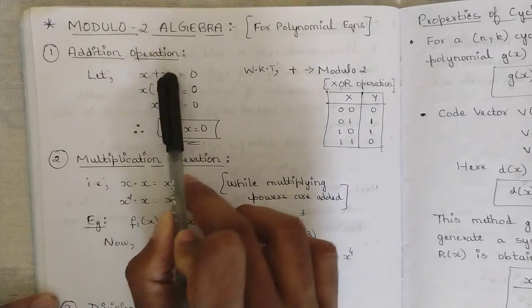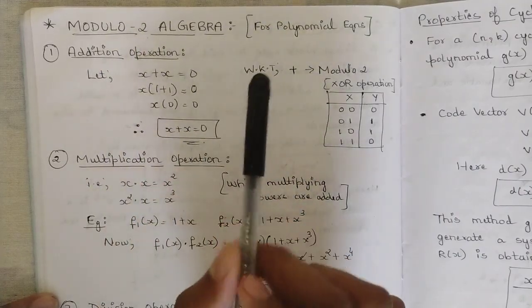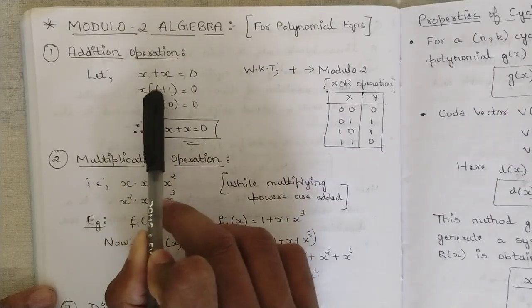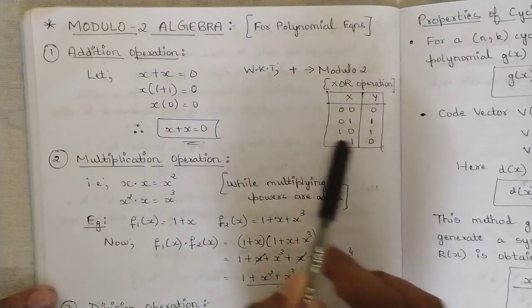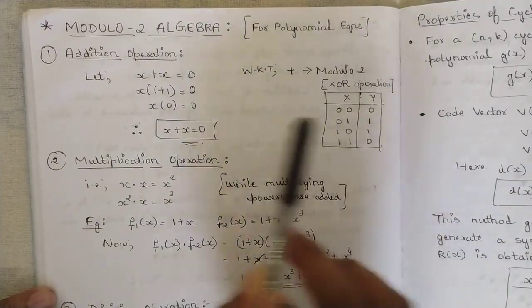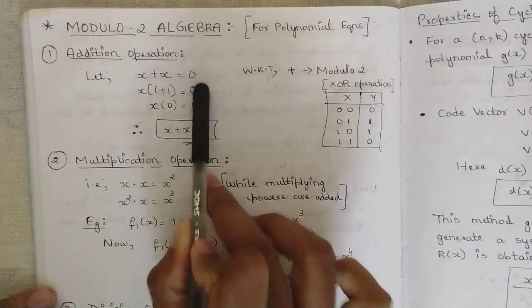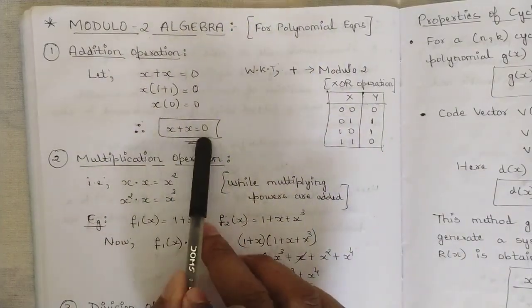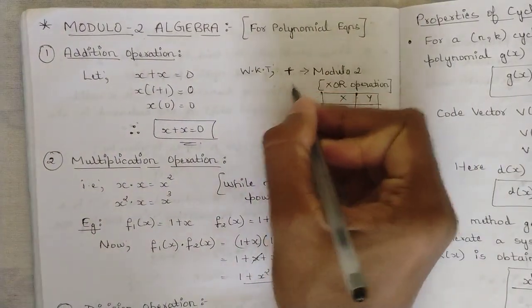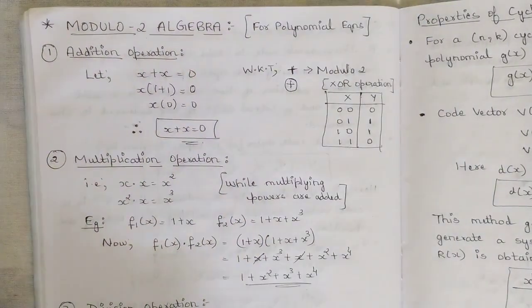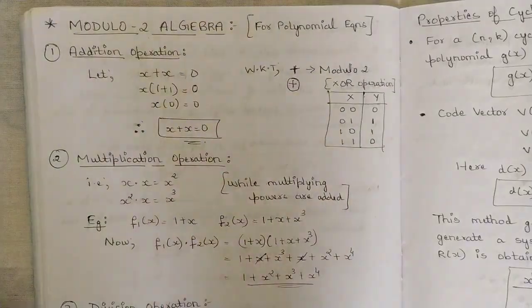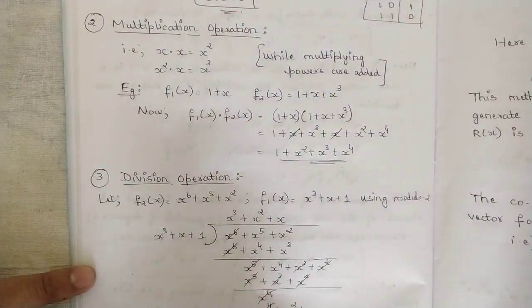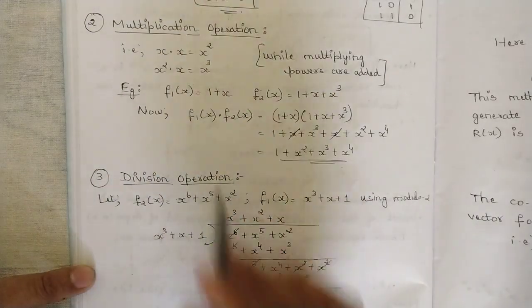In modulo-2 addition, same values cancel out. For example, x + x: take x common, giving x(1+1). Since 1+1 = 0 in modulo-2 (same as XOR of 1 and 1), we get x·0 = 0. Therefore x + x = 0. This is represented by a plus sign or a circled plus. Next is multiplication, which is direct multiplication where powers are added.